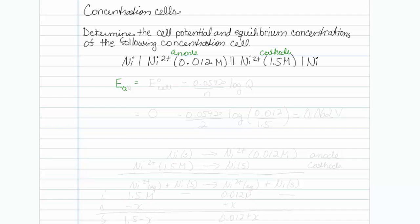So E cell is equal to E standard state cell minus 0.0592 over N log of Q. E cell at standard state is pretty easy. That's 0. They're both the same redox pair. Minus 0.0592, nickel to nickel 2 plus is 2 moles of electrons, log of Q.